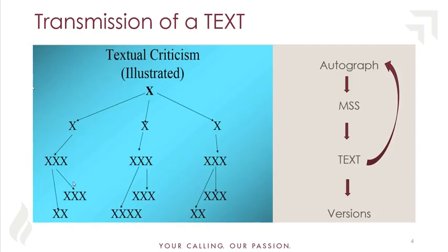To illustrate: say X at the top is the autograph — the book of Galatians from the original — then three copies of these, then more copies of those, from even more copies. Each copyist has certain characteristics called transcriptual characteristics: handwriting styles, abbreviations, symbols in the margins, use of particular words, spelling changes, subtle changes in grammar and syntax.